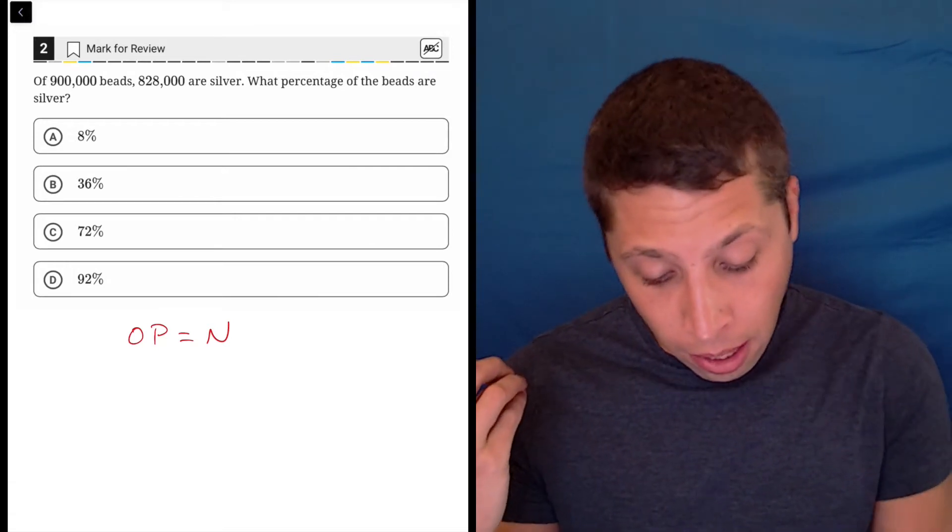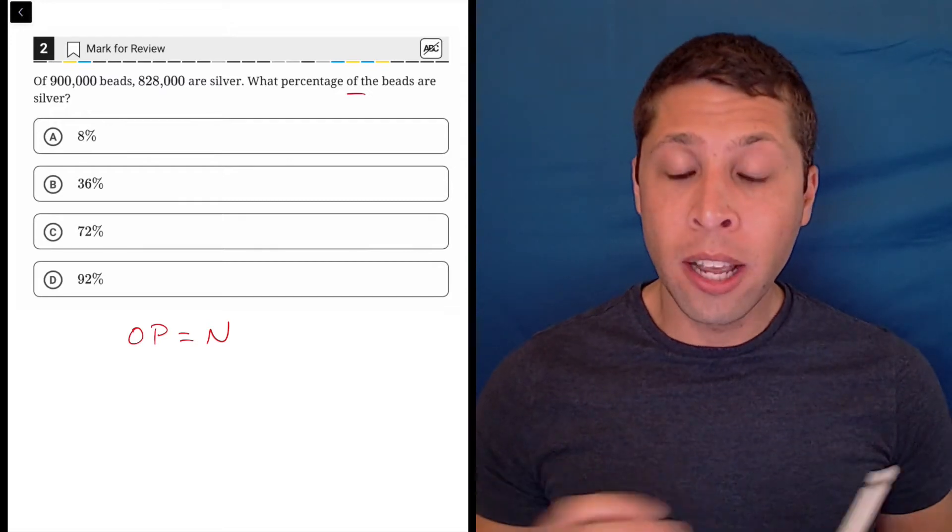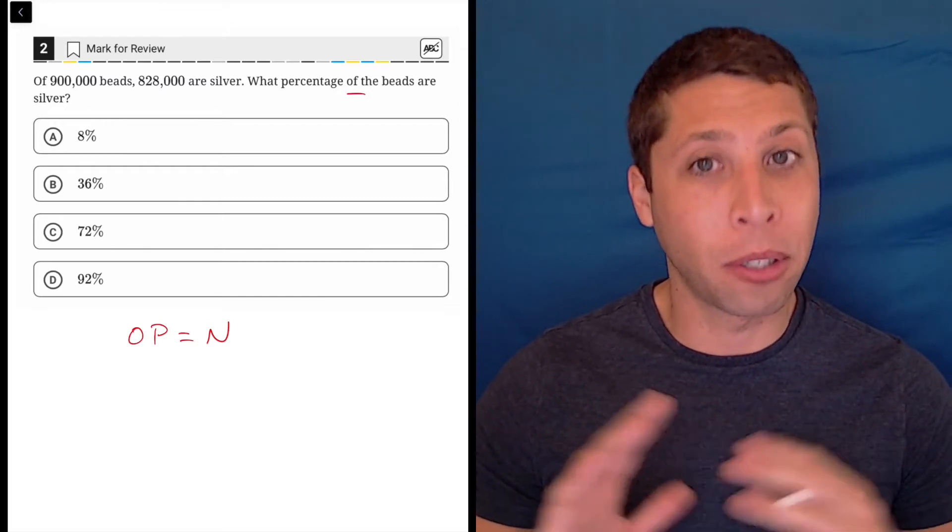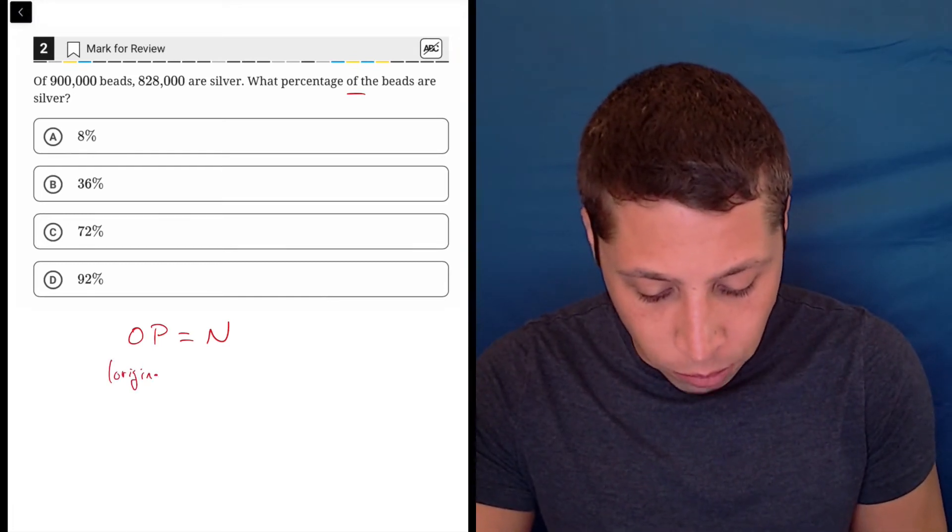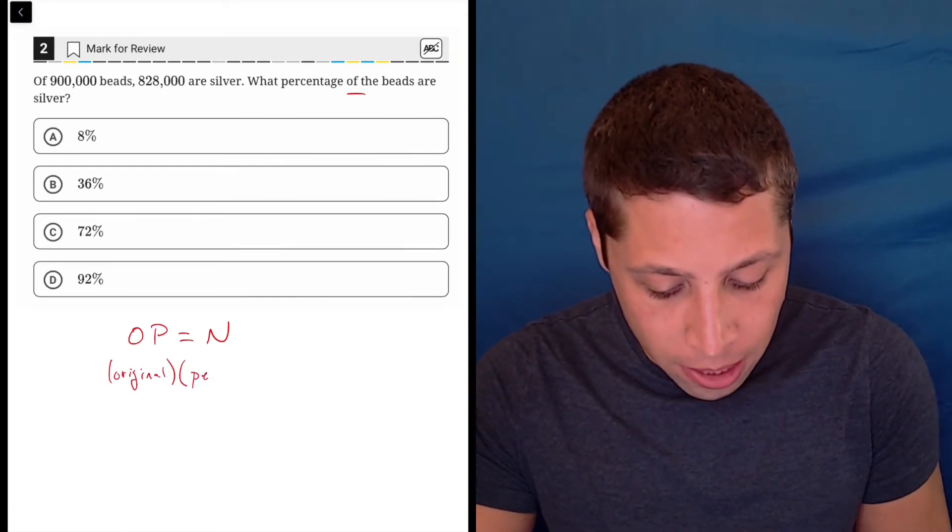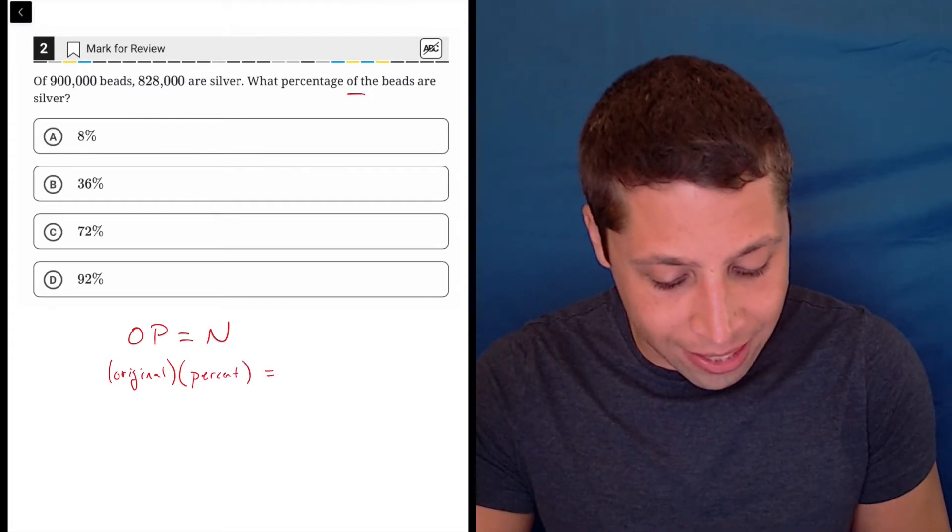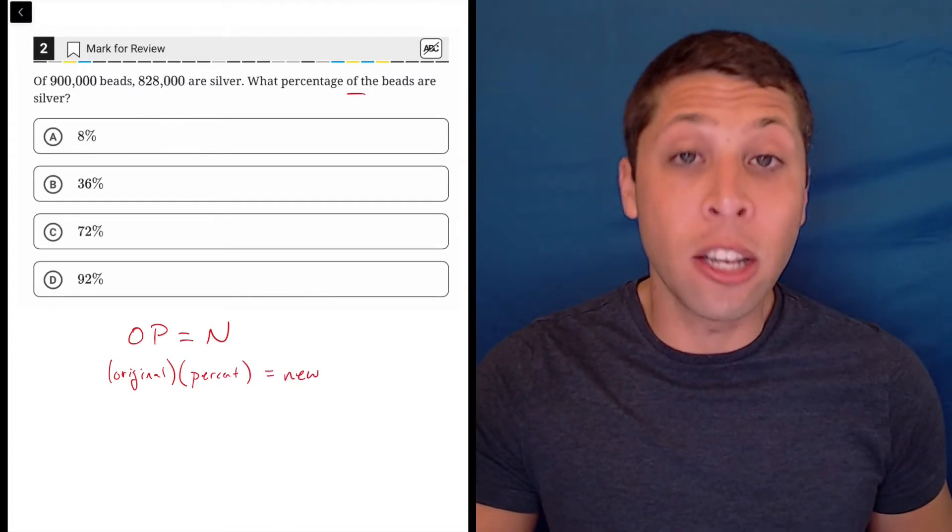This is a simple percentage of question, so there's no increase or decrease. It's not a percent change, so we can use this traditional version of the formula. The O stands for the original amount, the P is the percentage as a decimal, and the N is the new amount.